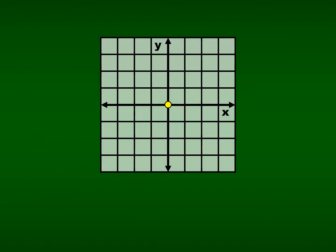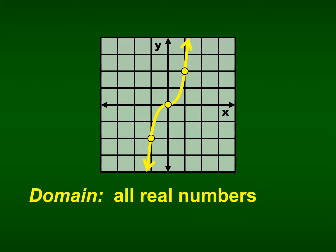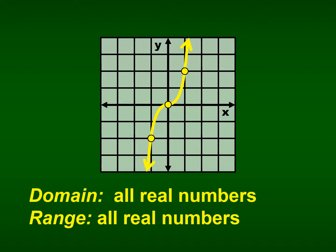So 2x cubed has the origin, and we'll plot a couple more points and sketch it. The domain is all real numbers. Since it is an odd function with point symmetry at the origin, the range is also all real numbers. Remember, the range is only limited when you have a parabola in your power function.